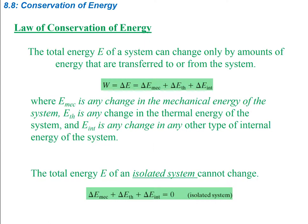The last section covers a general overview of conservation of energy, including all the different types of energies. The total energy of a system can change only by amounts of energy that are transferred to and from the system, where mechanical energy covers any change in mechanical energy, E_TH is any change in thermal, and E_INT is any change in other internal energy. The total energy of an isolated system cannot change, so the work done is zero.